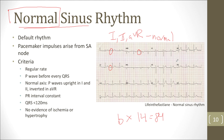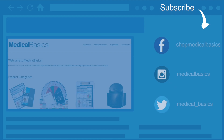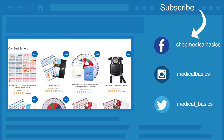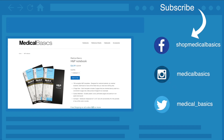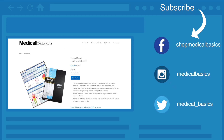Hopefully that helped you get a general overview of how to approach an EKG. If anyone ever asks you to read an EKG, you go through all those steps, comment on anything that looks different, and come to a differential of what the EKG may be showing. I just showed you a normal sinus rhythm. Be sure to check out medicalbasics.com for more educational resources like our H&P notebook, and don't forget to subscribe for more tips and lessons.